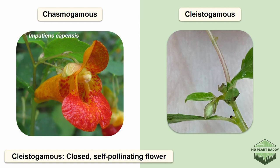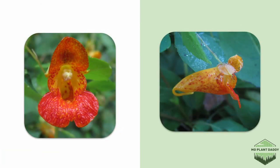However, the plants that grow from the seeds of cleistogamous flowers are smaller than plants grown from the seeds of chasmogamous flowers. Now focusing on the chasmogamous flower, which has five total fused petals: around the opening there is one on top, two on the sides, and two that form a landing pad for insect pollinators, although hummingbirds also pollinate these flowers.